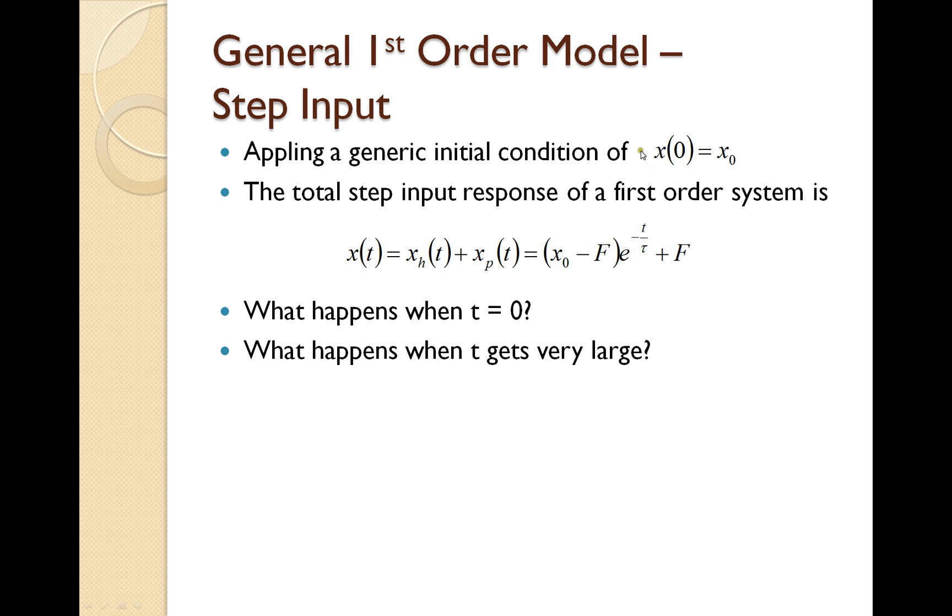Now, if we apply a generic initial condition, that is, we assume that at time equals zero, the initial condition is this x-naught, then we can apply that initial condition and find that the value of that unknown constant, a, is equal to the initial condition minus the final value or the force that's being applied to the system. So, when time is equal to zero, we see that this exponential term goes to one and we're left with x-naught minus f plus f, which is the same thing as x-naught or is our initial condition. So that is a true statement. It jives with the initial condition that we have set up here.